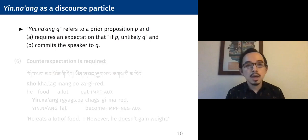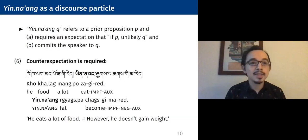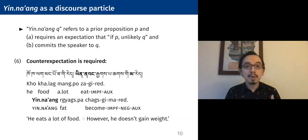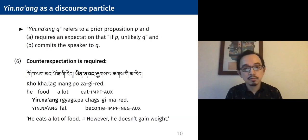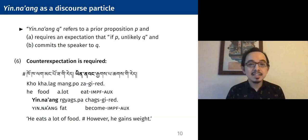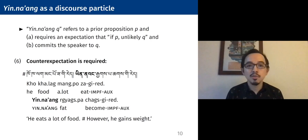I want to first establish that counter-expectation is required. So for example, in example 6: 'He eats a lot of food, but he doesn't gain weight' — this is fine with that negation in the verb. If we take away the negation, and we end with 'He eats a lot of food, but he gains weight,' that doesn't make sense, in the same way that it doesn't make sense for English 'but' or 'however.' This is considered unacceptable as a continuation with yinang.